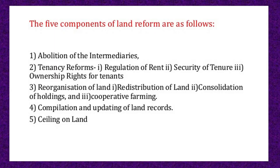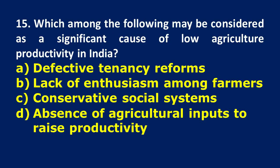Defective Tenancy Reforms is a primary cause of low agricultural productivity. Land reforms were introduced to achieve an egalitarian society. Land ceiling, tenancy reforms, and land relations — defective structure in all these areas negatively impacts agricultural productivity.